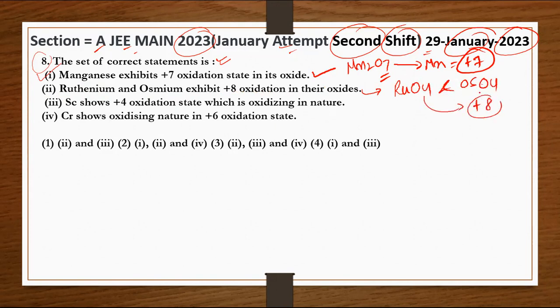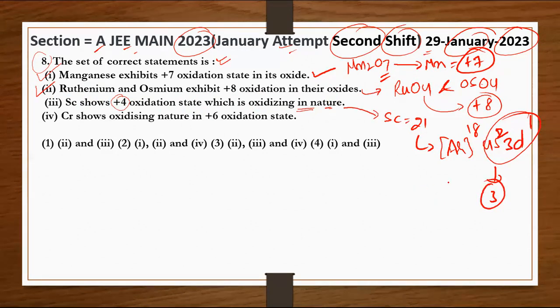तो इसका मतलब second statement भी right है। Third statement में अगर हम बात करें - Scandium shows +4 oxidation state which is oxidizing in nature। तो भी आपको पता है कि जो Scandium है उसका atomic number 21, electronic configuration क्या होगी - Argon 18, 4s2, 3d1। तो इसके outer shell में कितने electrons आ रहे हैं? तीन electrons आ रहे हैं, तो इस चार कैसे lose कर सकता है?